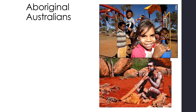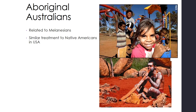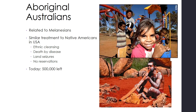For indigenous populations in Australia, we have aboriginal Australians who are related to Melanesians in the area, and they've had similar treatment to Native Americans in the U.S. They have been victims of ethnic cleansing and death by disease. When Europeans came, as many as 90 percent of Native Americans died from warfare and disease brought by Europeans. Aboriginals have also had land taken away, similar to Native Americans, but they do not have reservations in Australia like we do in the United States. Today there are about 500,000 aboriginal Australians left, and they suffer from endemic poverty and are extremely culturally marginalized.